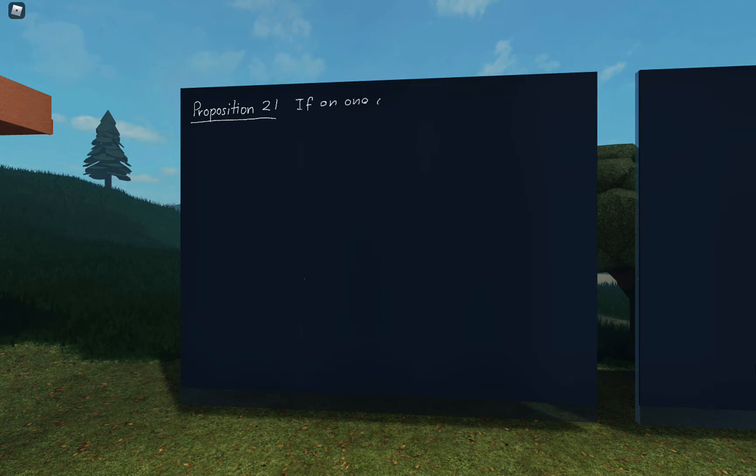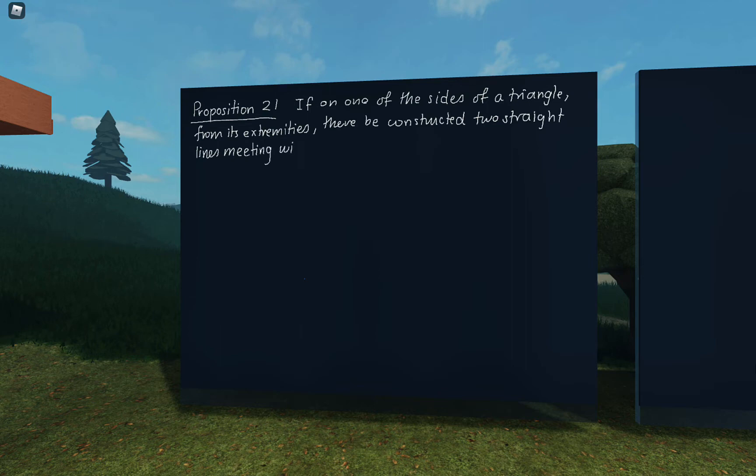Proposition 21 says the following. If on one of the sides of the triangle from its extremities, there be constructed two straight lines meeting within the triangle.